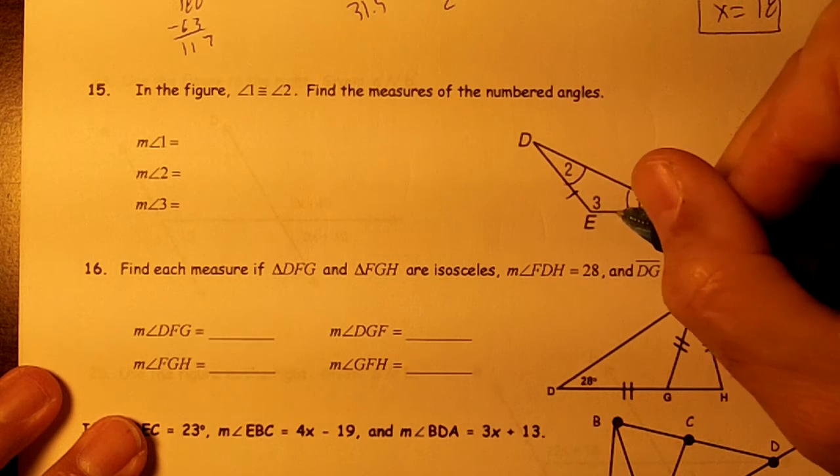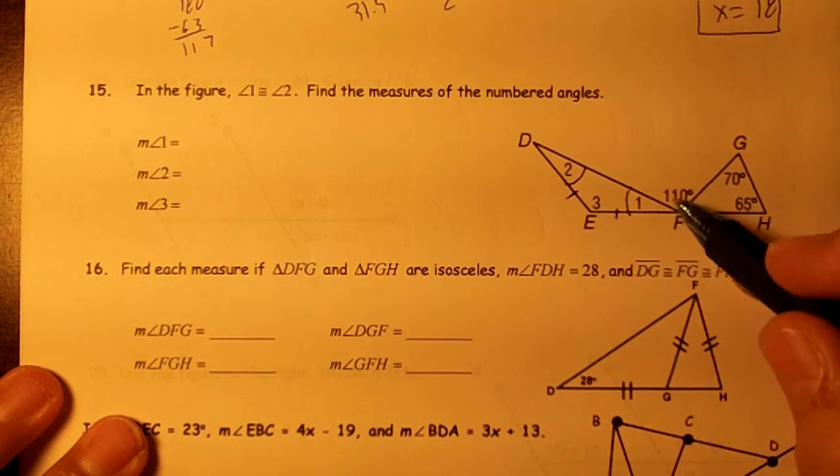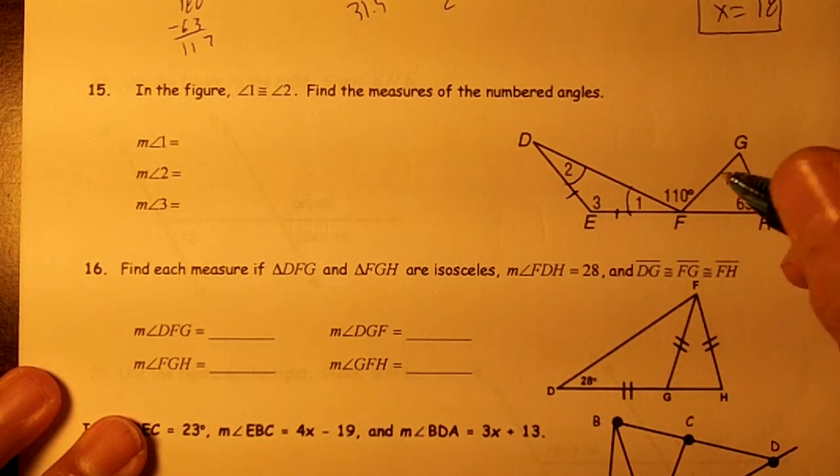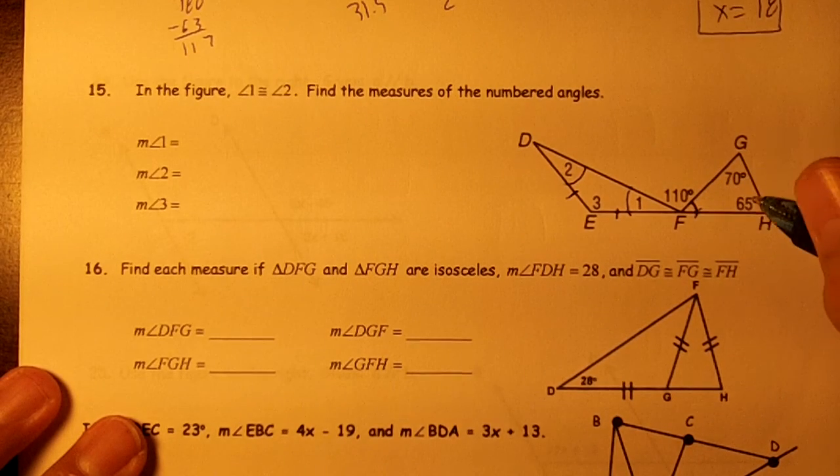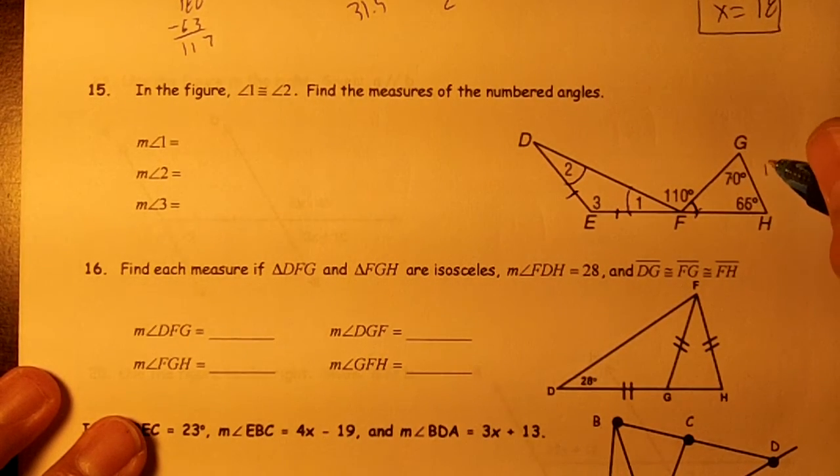That means this edge is equal to this edge. This is an isosceles triangle. First thing we need to do is get this little bitty angle here. So if you add these two up you get 135.